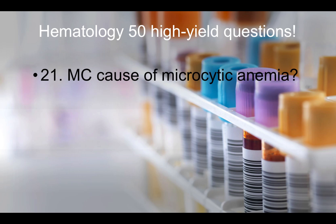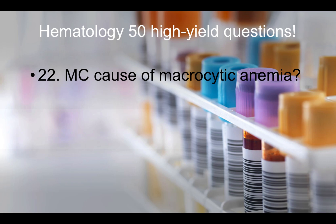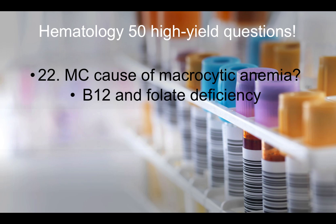Question twenty-one: Most common cause of microcytic anemia — that is iron deficiency. Question twenty-two: Most common cause of macrocytic anemia — that would be B12 and folate deficiency.